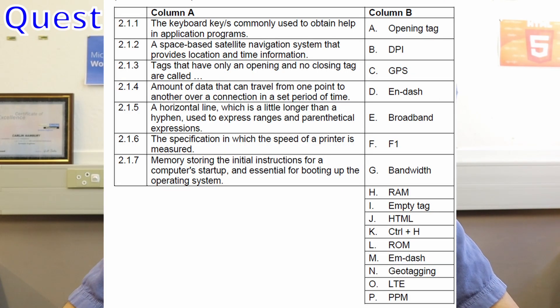Question two is usually a match-the-column question, so again definitions, acronyms, and knowing your terms are essential — use flashcards. They can bring any terms; an old paper I have goes through RAM, ROM, HTTPS, phishing, pharming, switch, router, terabyte, projector, wireless access point, and more. Go through Column B first, acquaint yourself with those terms, then move to Column A. There's also usually a section where you fill in the missing word, or choose the correct one from two options given.